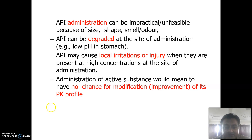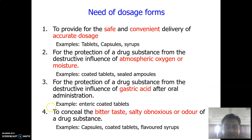Even beyond low gastric pH, different drugs may pass through different environments and undergo degradation. APIs may also cause localization or injury when present in high concentration at the site of administration, causing irritation and injury to local tissues due to the high concentration at the administered site. This leads to the need for preparing dosage forms.